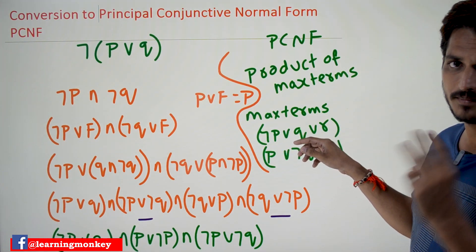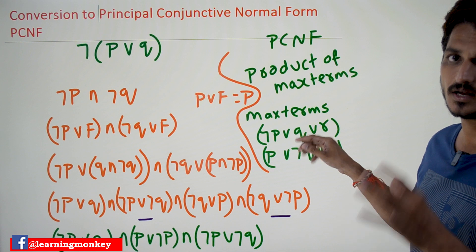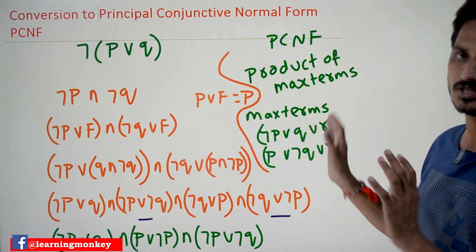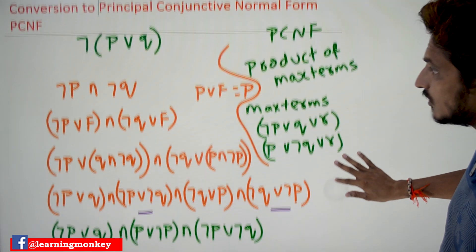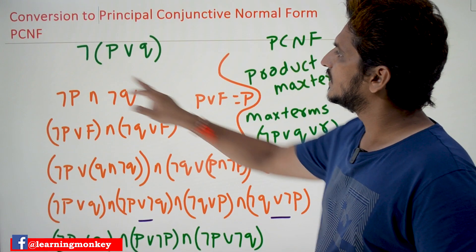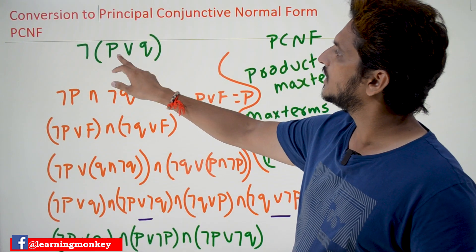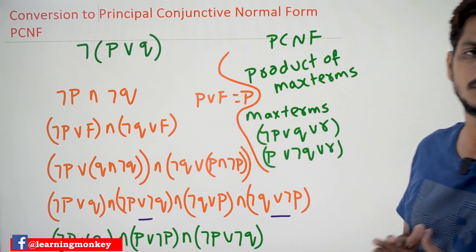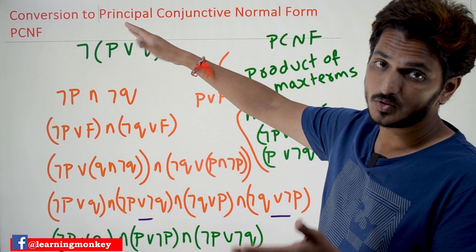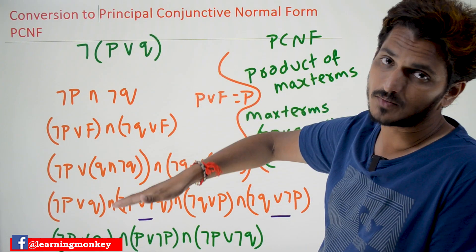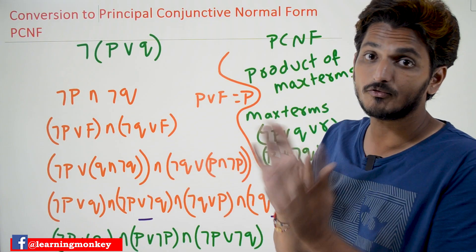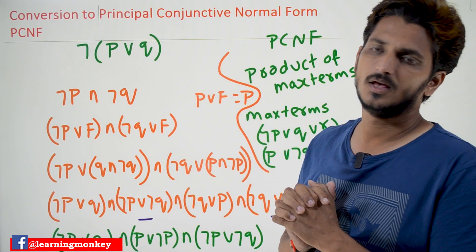So for three variables, how many max terms will there be? Eight max terms will be there. These discussions were made in our previous classes. Now coming to the example — let's take this example: negation of p disjunction q. We have to convert this proposition into the equivalent proposition which contains only max terms — product of max terms.